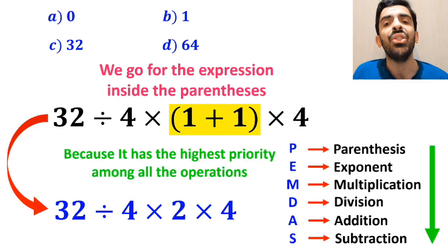So instead of this expression, we can write 32 divided by 4 times 2 and again multiply by 4.